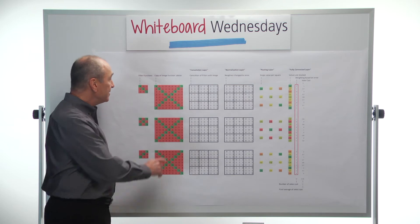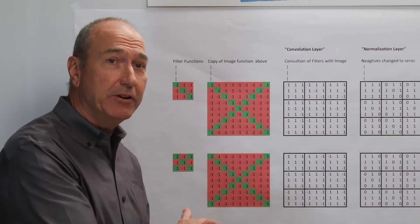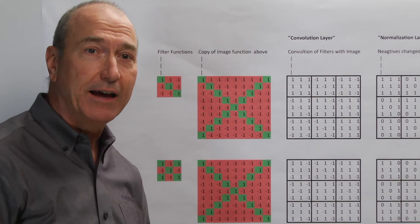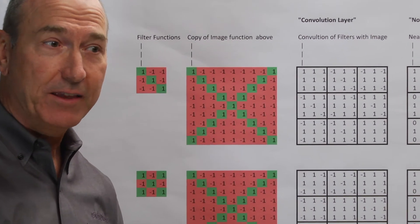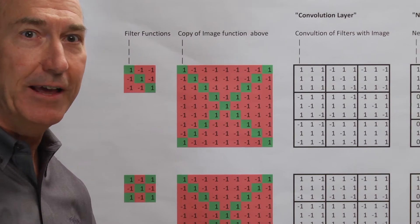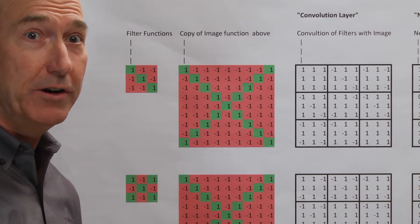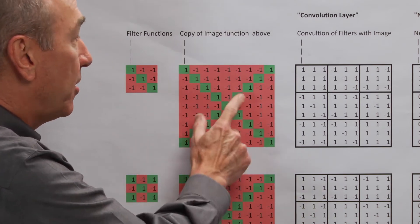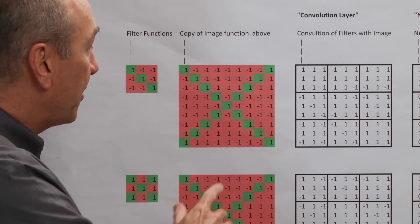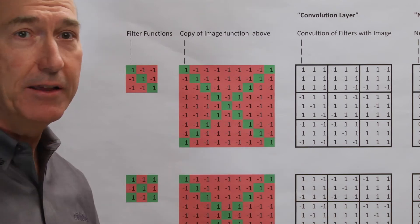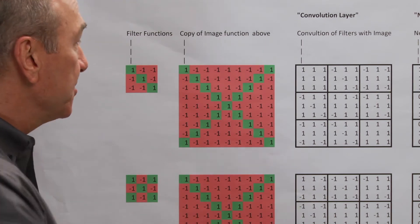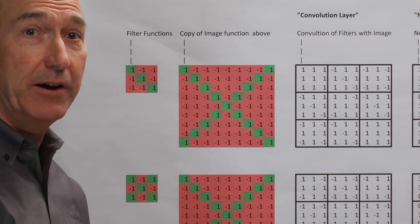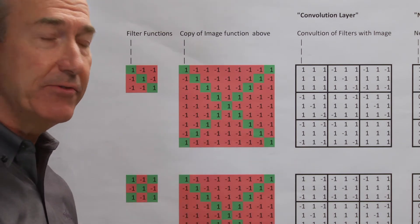What this neural network calculator is going to do is try to recognize if these green lines represent the letter X or not. So it's a calculator specifically for that - is this a letter X or not? In order for the calculator to work on it, I've assigned the number 1 to all the green squares, and all the background squares, the red ones here, have the number minus 1. So this array of 1s and minus 1s becomes the image function.